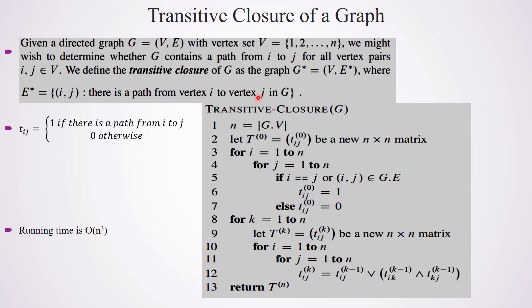Coming back to the algorithm, the complexity of lines 3 to 7 is O(n²) because there are two nested for loops each iterating up to n. For lines 8 to 12, there are three nested for loops each iterating from 1 to n, so it is O(n³). The running time of transitive closure is also O(n³). That's all I want to share in this video. Thank you.